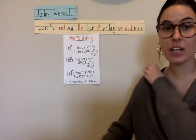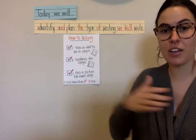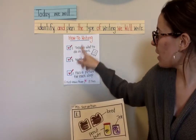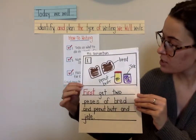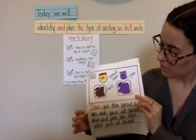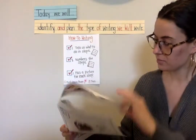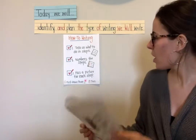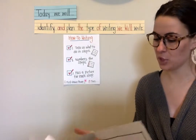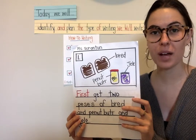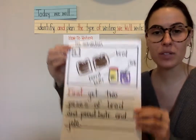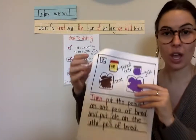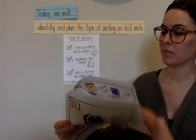I'm going to go back through my story and I want you to put a thumbs up or thumbs down if my how-to has all three of these parts. Does my writing tell us what to do in steps? Let's see — first, then, finally. It has those starter words, those how-to words. What about numbering the steps? Do I have numbers on my page? When you see it, put your thumbs up. Yeah, and point to where you see my numbers — in the corner. So we have one, two, and three.